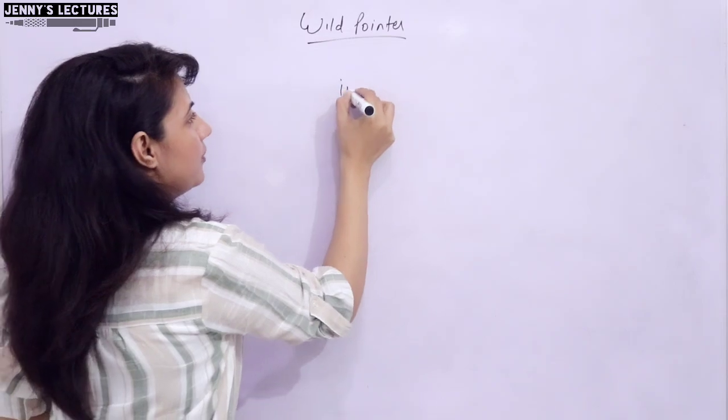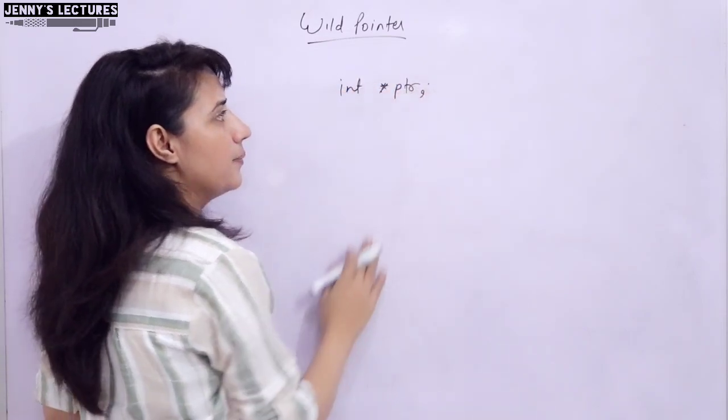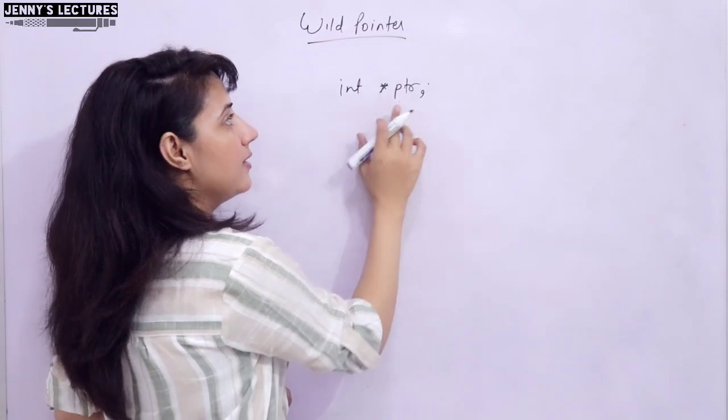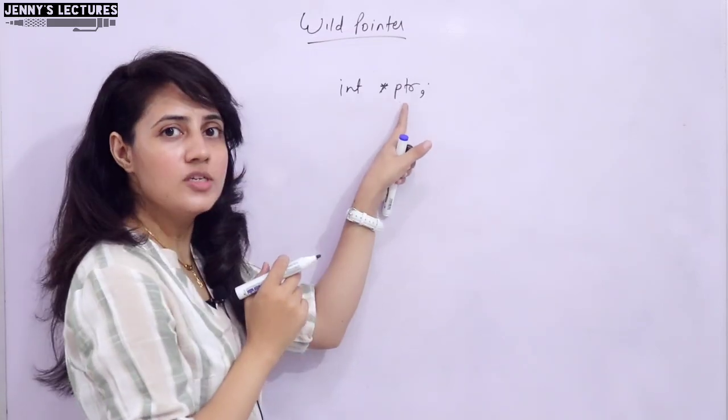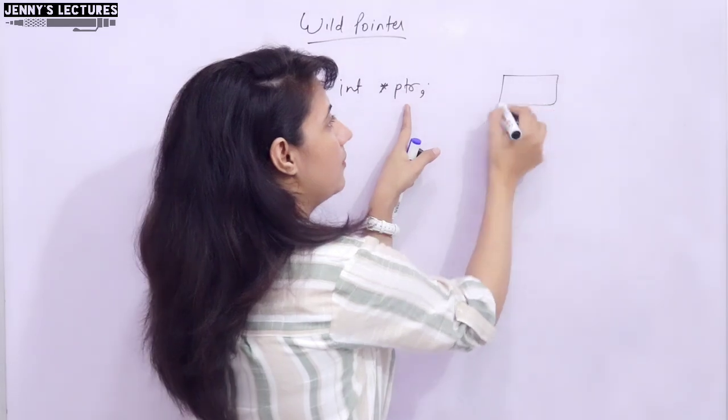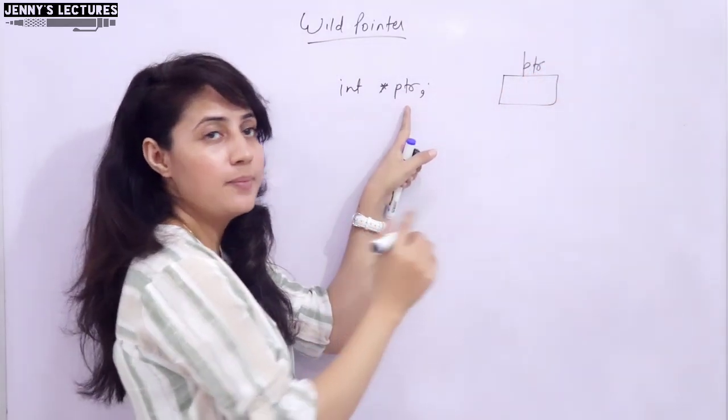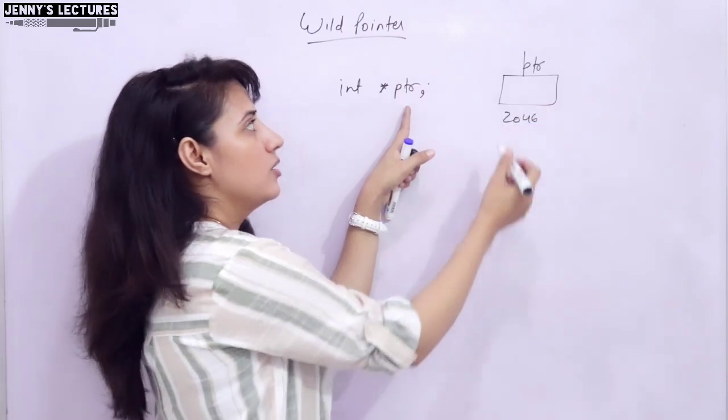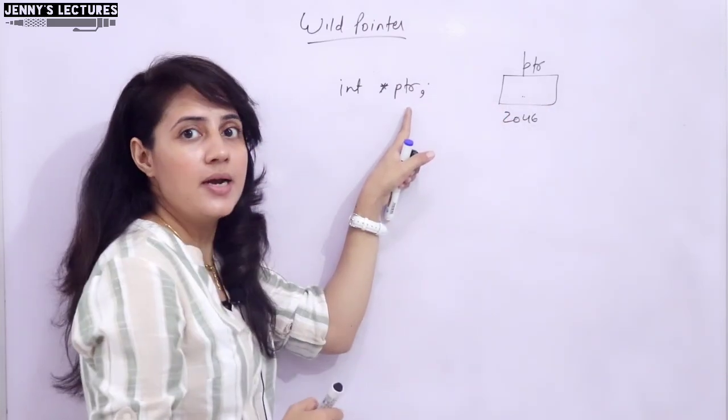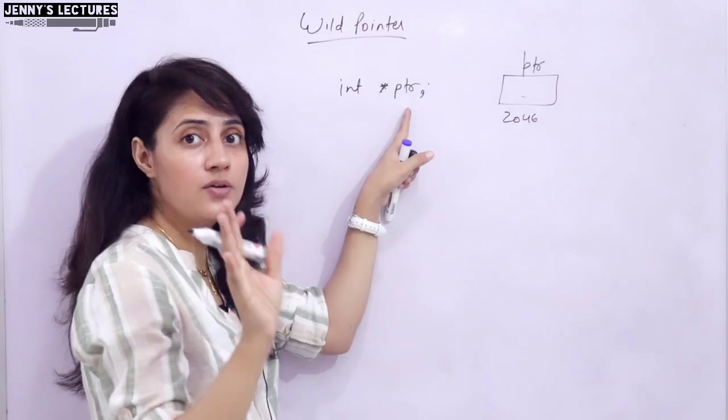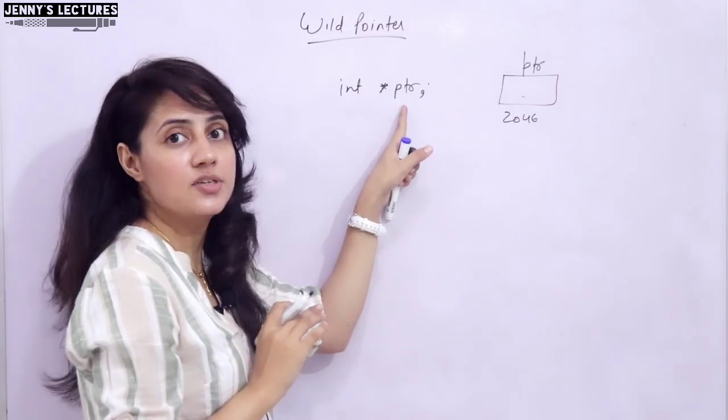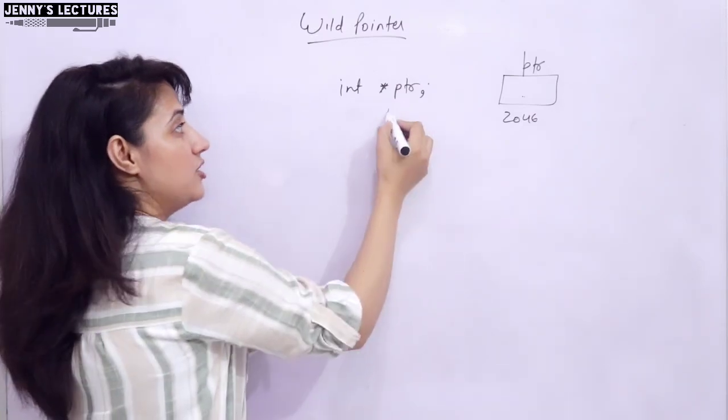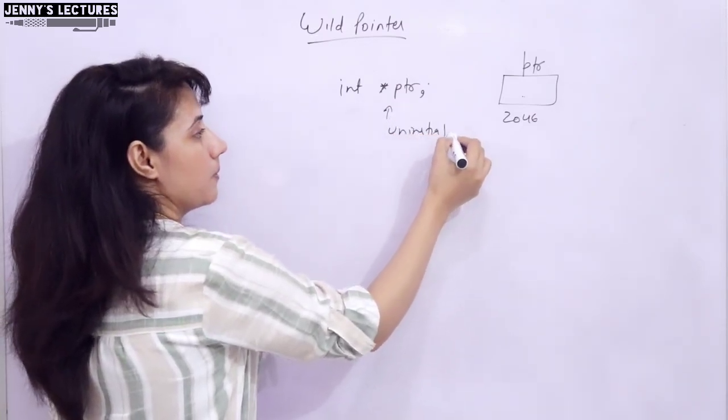I hope everybody knows how to declare a pointer: int star PTR, right? It's just a declaration of pointer. Here at this time, what is the address in this PTR variable? PTR is a variable. Memory has been assigned to this variable and some address would be there. Obviously, suppose address of this pointer is 2046 and it is going to contain some address. Obviously pointer is a variable that is going to contain address of another variable, but here I'm not assigning any address. So at this time, it is an uninitialized pointer.